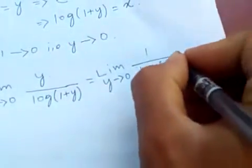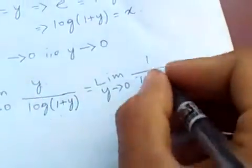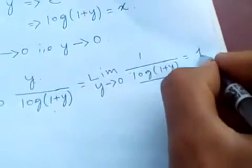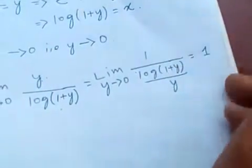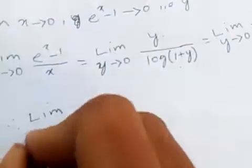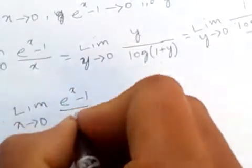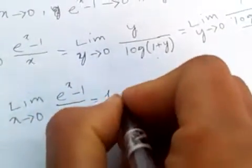This, when you come down here, is nothing but in the previous I have proved this one, so this is just 1. Therefore, limit x tends to 0 of (e^x - 1)/x is equal to 1.